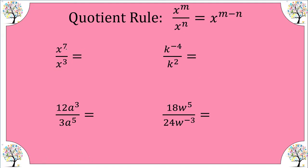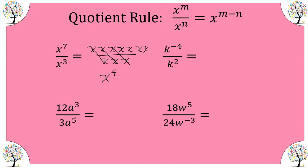Let's expand x to the seventh over x to the third. X to the seventh is seven factors of x divided by x times x times x — three factors. Anything divided by itself cancels and gives you a one. So we're left with x to the power of four. All we did was subtract seven minus three to get four — that is what the rule says. This expansion just shows why. If you ever forget, you can expand and cancel out.